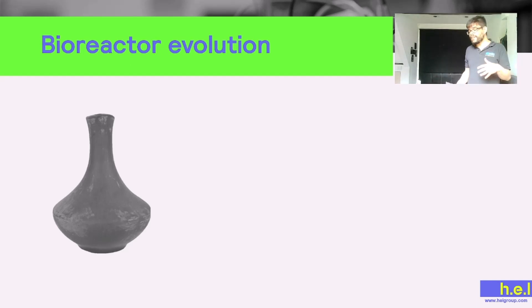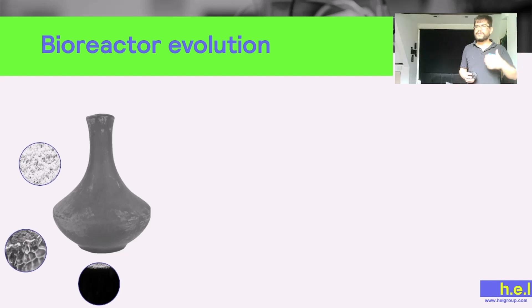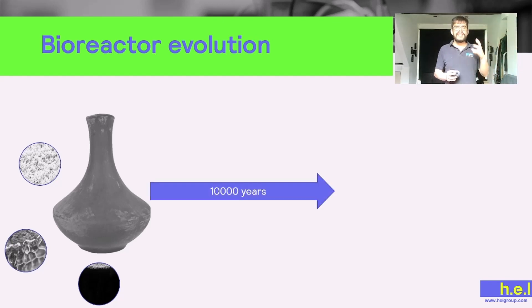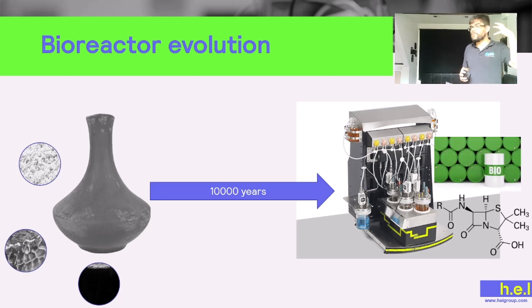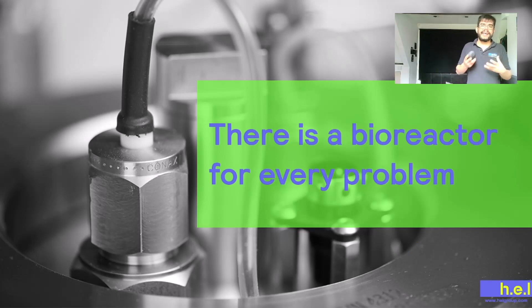We know that bioreactors have changed a lot over time. Whereas 10,000 years ago they were just a clay pot used to ferment rice, honey, or grape juice to generate sake, mead, or wine, nowadays they are very complex machines such as BioExplorer manufactured by HEL. They don't only produce fermented products but also biofuels or drugs such as penicillin. If you're interested in this, we have another video focusing on the history of bioreactors.